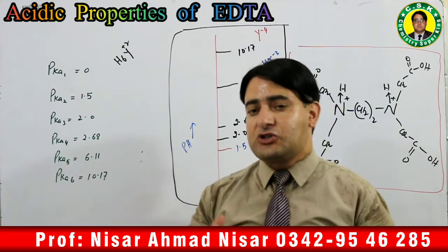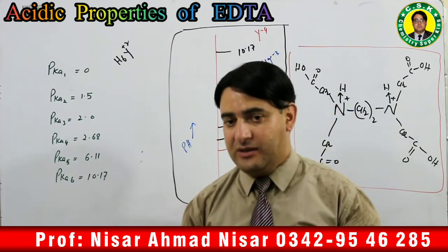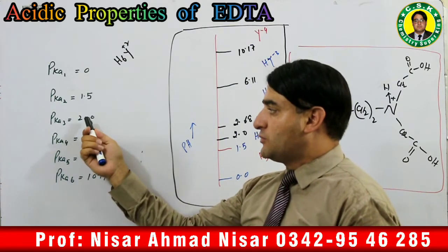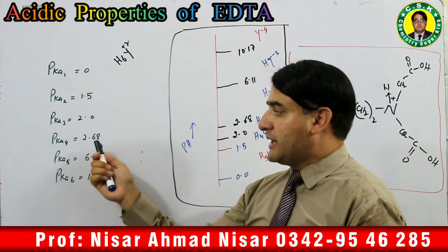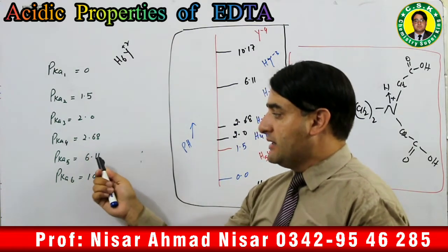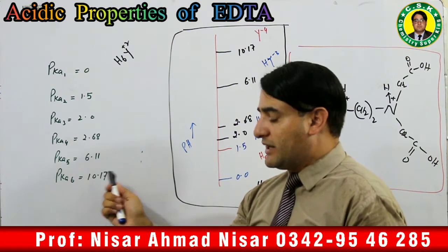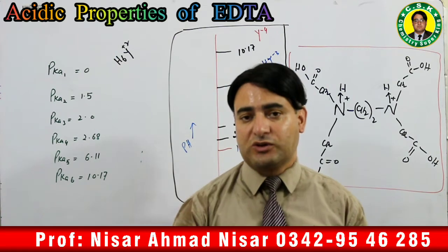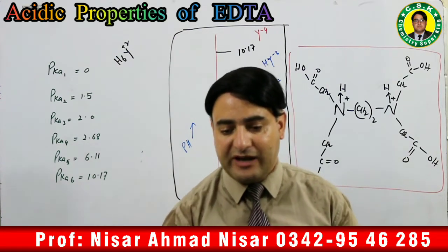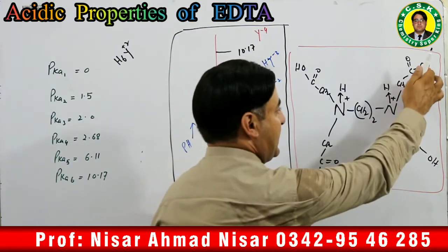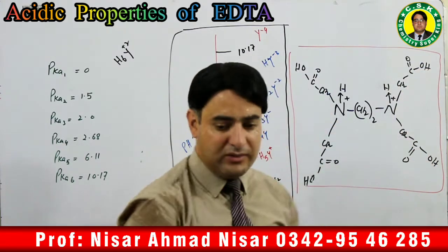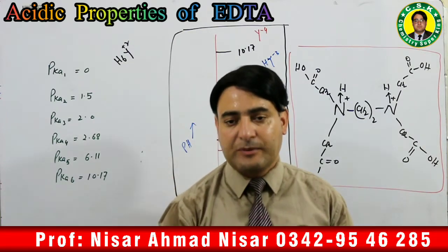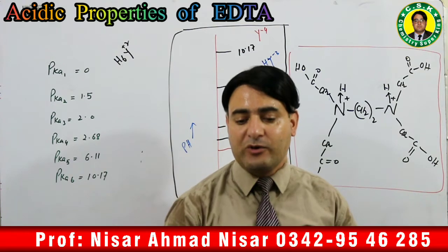EDTA has 6 pKa values: pKa1 = 0, pKa2 = 1.5, pKa3 = 2.0, pKa4 = 2.68, pKa5 = 6.11, and pKa6 = 10.17. The first 4 pKa values correspond to the carboxylic acid protons, while the remaining 2 values correspond to the amino (nitrogen) protons.